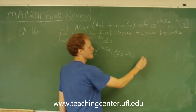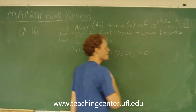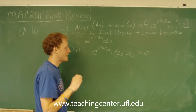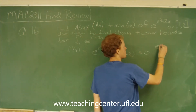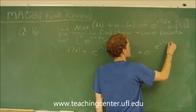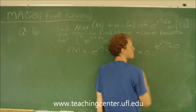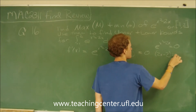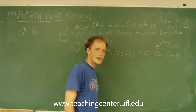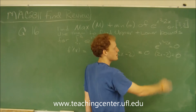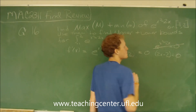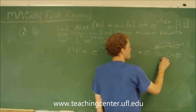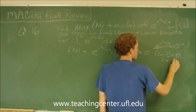To find critical numbers, we set the equation equal to 0. Let's set each individual part equal to 0: e to the x squared minus 2x equals 0, and then 2x minus 2 equals 0. An exponential function can never equal 0, so we don't even need to worry about it. From 2x minus 2 equals 0, we see that x should equal 1.